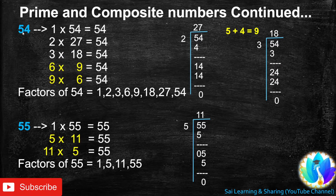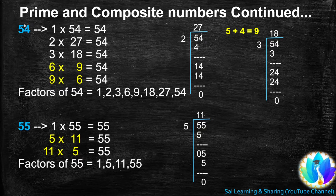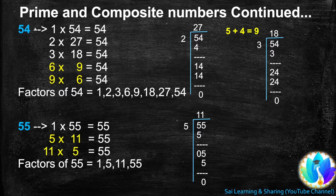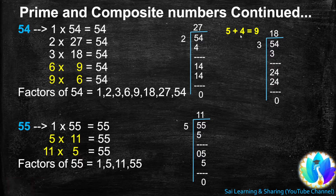Next, 54. 1 is a factor of every number, so 1 times 54 equals 54. 54 is a multiple of 2 because the ones digit is an even number. When we divide 54 by 2, we get quotient 27, so 27 is another factor of 54, and 2 times 27 equals 54. 54 is also a multiple of 3 — using the divisibility rule, 5 plus 4 equals 9, and 9 is a multiple of 3.